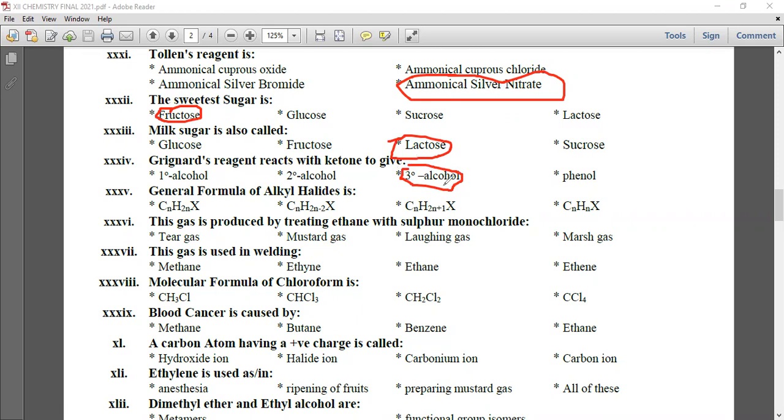General formula of alkyl halide is CnH2n+1X. The gas produced by treating ethane with sulfur monochloride is mustard gas. This gas is used in welding - that's ethyne because of its oxy-acetylene flame. Its temperature is 3000°C.